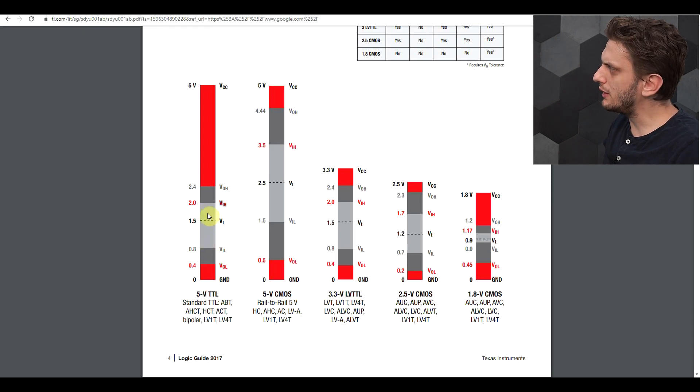But that leaves quite a large gray zone in between. Now you do have a threshold that here is defined at 1.5, but in reality this threshold can be anywhere in between the 0.8 and the 2 volts.